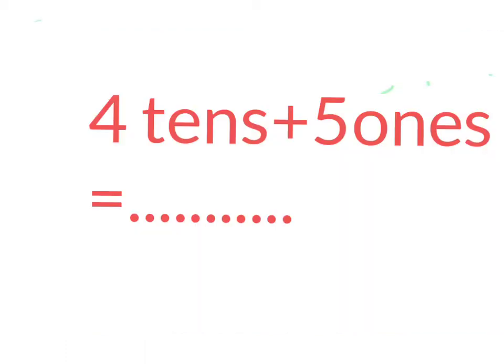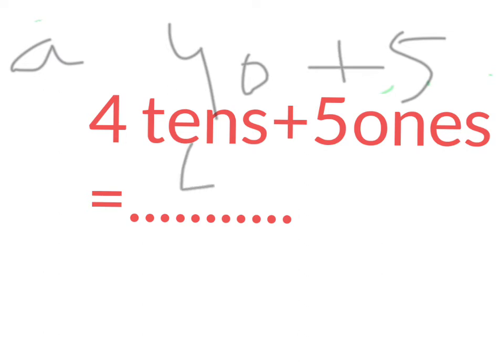Our first part is four tens plus five ones. Four tens equal forty, and five ones equal five, so forty plus five equals forty-five. We will write here forty-five.